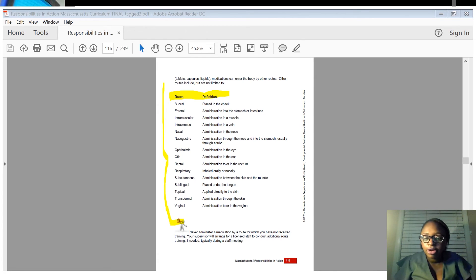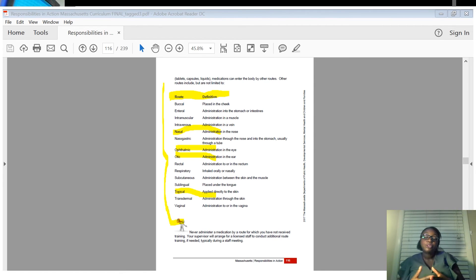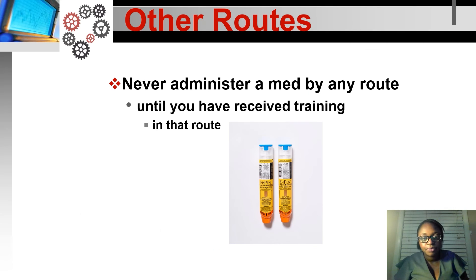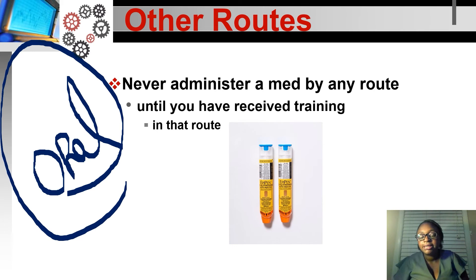Oral, ophthalmic (eye), otic (ear), intranasal sprays, and topical (skin) are the common routes in home settings. Intramuscular (IM) and IV are not typically used in homes, with one exception: epi-pens, which are life-saving for allergies and can't wait for a nurse to arrive. However, epi-pens are not covered in the MAP curriculum. When newly MAP-certified, you're only covered for oral medication administration.